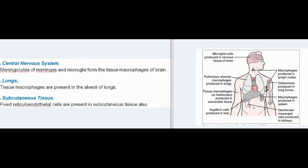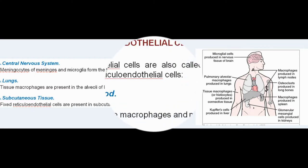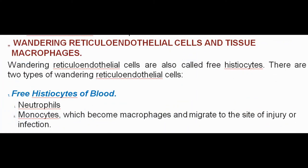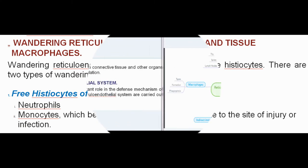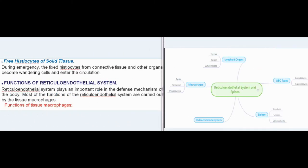Fixed reticuloendothelial cells are also present in subcutaneous tissue. Wandering reticuloendothelial cells are also called free histiocytes. There are two types: free histiocytes of blood — neutrophils and monocytes — which become macrophages and migrate to the site of injury or infection; and free histiocytes of solid tissue, where during emergency, the fixed histiocytes from connective tissue and other organs become wandering cells and enter the circulation.